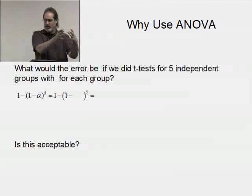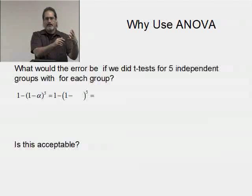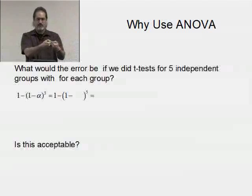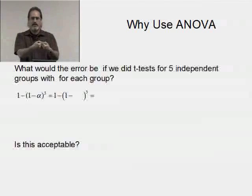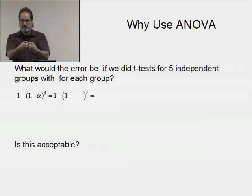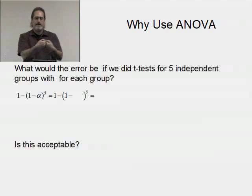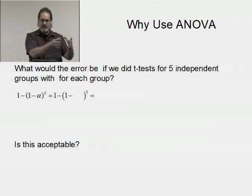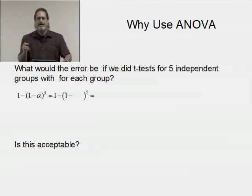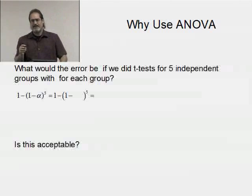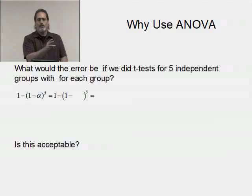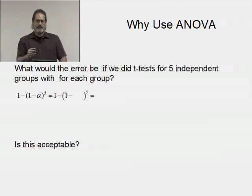I said alpha. That's saying the maximum probability of getting a type one error is alpha. Now I do another t-test, there's another alpha. Another t-test, another alpha. There's five alphas there. So each alpha would be controlling for type one error in each of those t-tests. But what's the probability I commit a type one error somewhere in those t-tests? It's bigger than alpha. How much bigger?